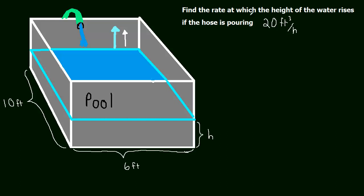So we want to relate the height of this water to the volume because 20 feet cubed per hour, that's how much volume is being added. So we want to relate volume to height. Well, we can just write out what volume is.